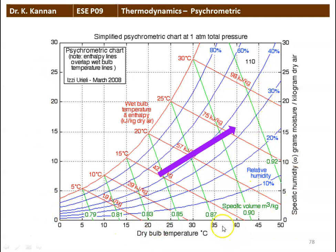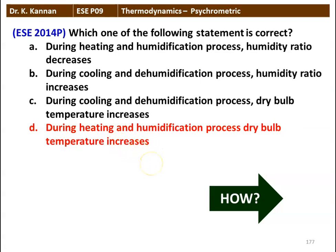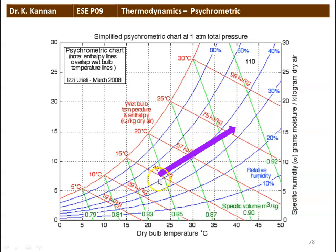This is the psychrometric chart. The x-axis is the dry bulb temperature and the y-axis is the specific humidity or humidity ratio. The blue color lines represent relative humidity, the red color inclined lines are the enthalpy lines, and the green color lines are the specific volume. The wet bulb temperature is measured on the saturated vapor line, along with enthalpy and dew point temperature. The process shown is heating and humidification, during which dry bulb temperature increases from approximately 22 degrees to 40 degrees and specific humidity increases.